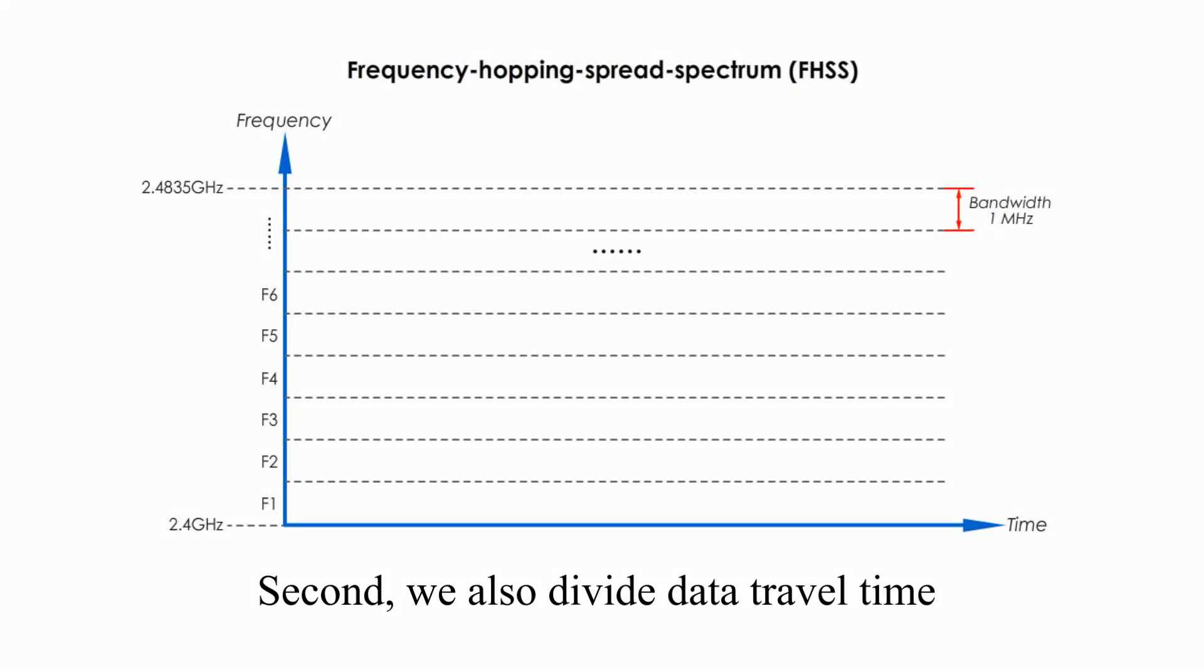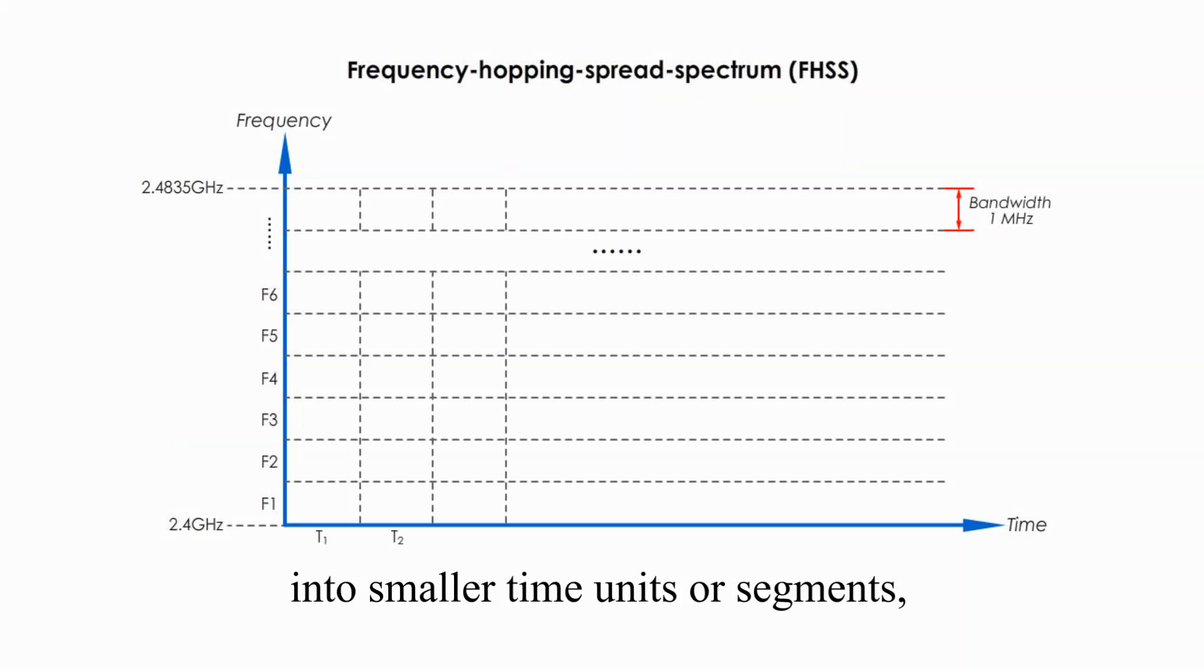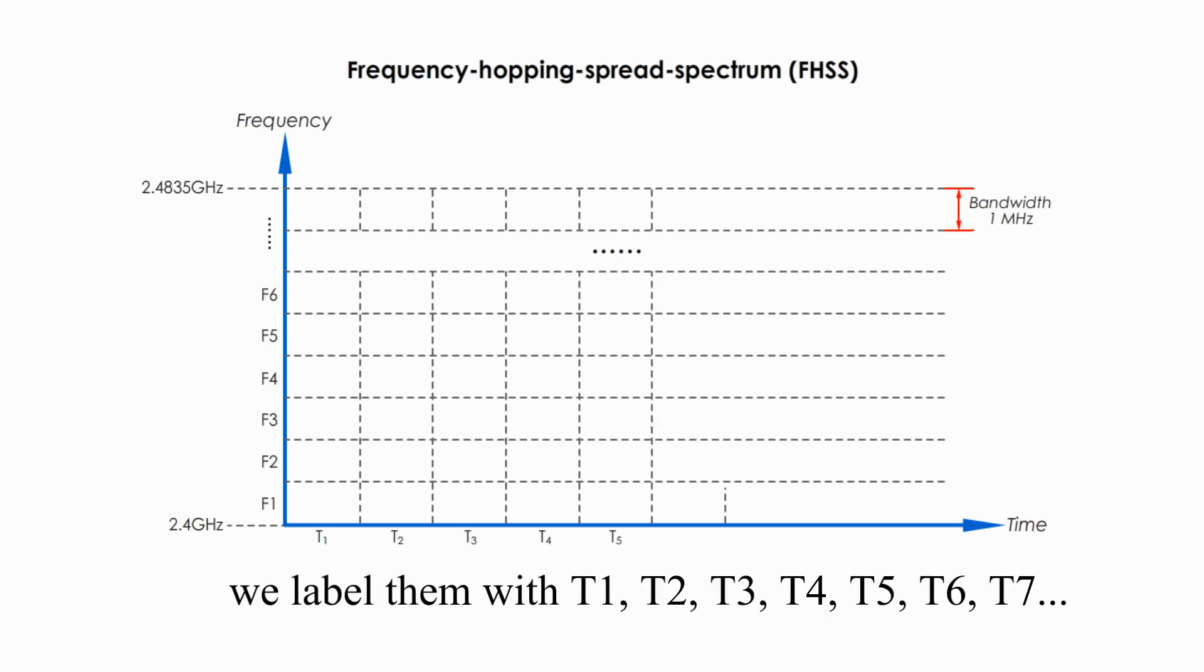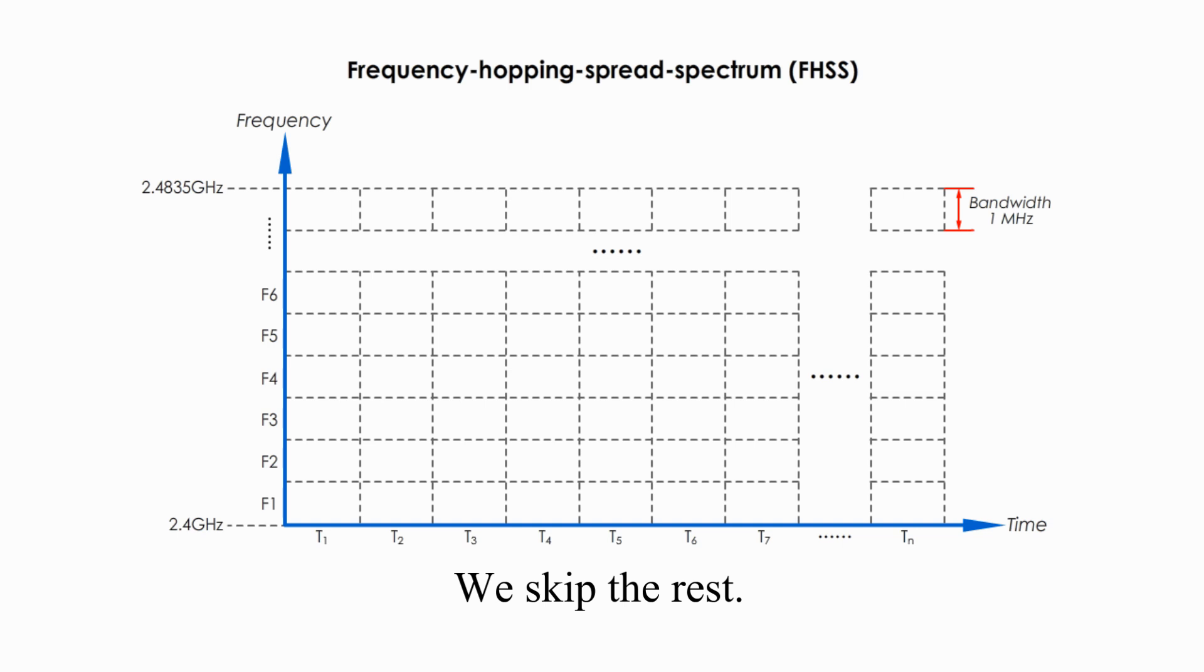Second, we also divide data travel time into smaller time units or segments. And we label them with T1, T2, T3, F4, F5, F6, F7, and so on. We skip the rest. Each tiny segment is called Hop Time.